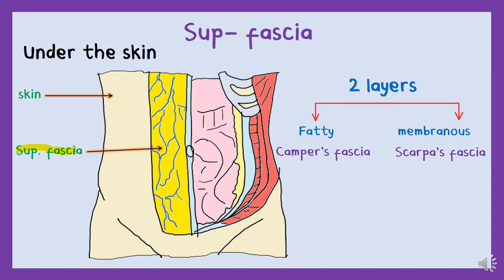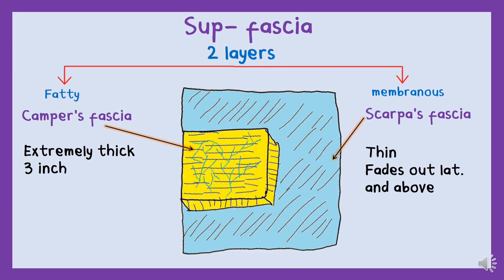We are done with the skin — let's study what is beneath it. The superficial fascia is divided into two layers: the fatty layer and the membranous layer. Other fancy names for these layers, which I hate, are Camper's fascia and Scarpa's fascia. The fatty layer, as you know, is always thick and variable — it can be about three inches thick in an obese person. The membranous layer, on the other hand, is thinner and fades out laterally and above.